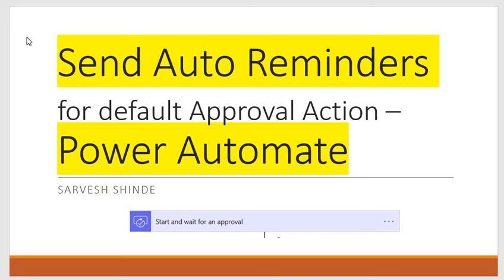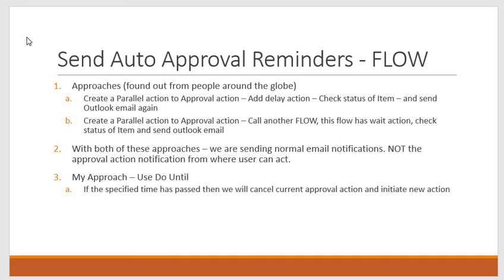When you look for a solution for this, you will find a few options. One is you can create a parallel action for your approval action, add a delay, and after that delay — let's say after 24 hours or 48 hours — you can get the item, check the status, and if no action has been taken, send another email.